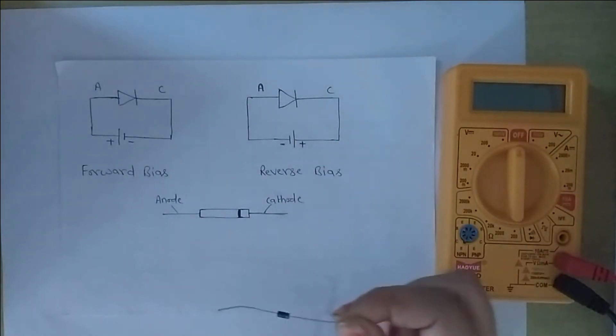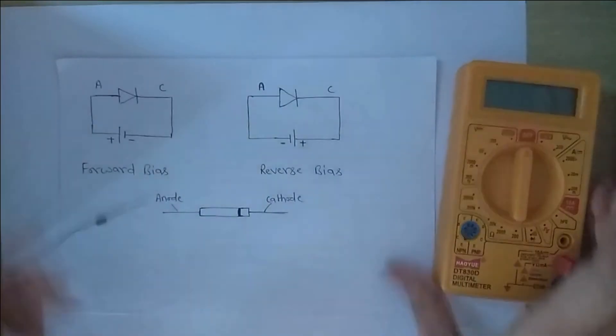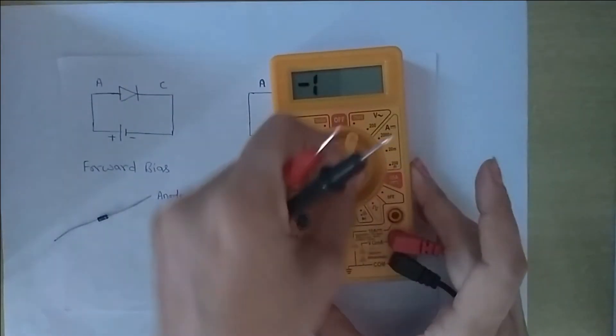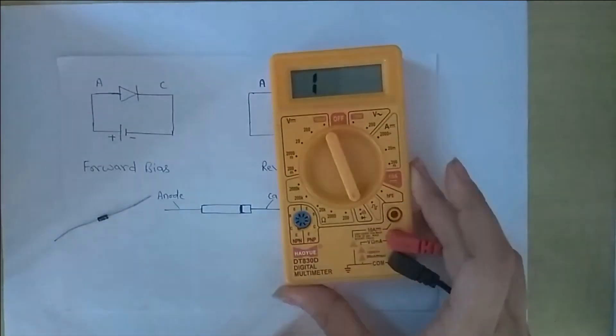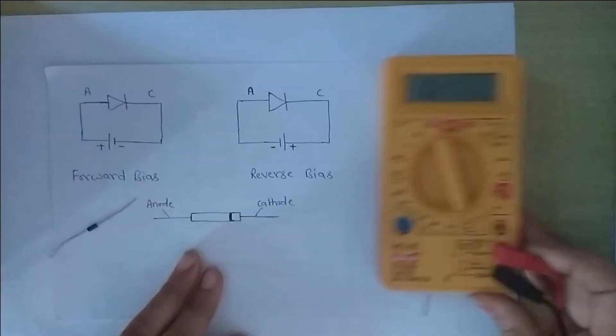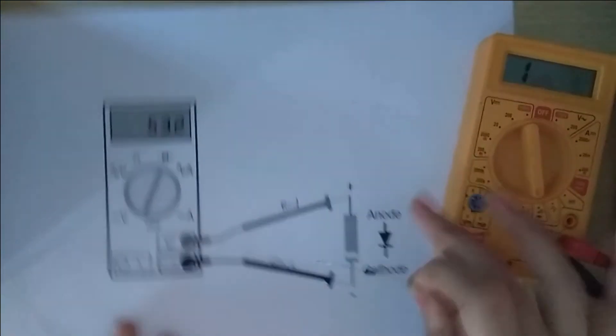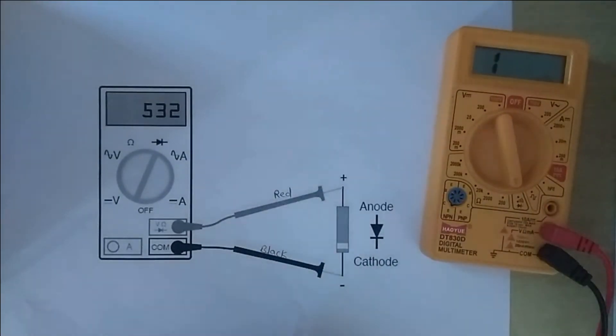To test a diode with a multimeter and to find out which terminal is anode and cathode, we place the multimeter in diode testing range. I place the knob in the diode testing range and connect the multimeter probes in forward bias condition.